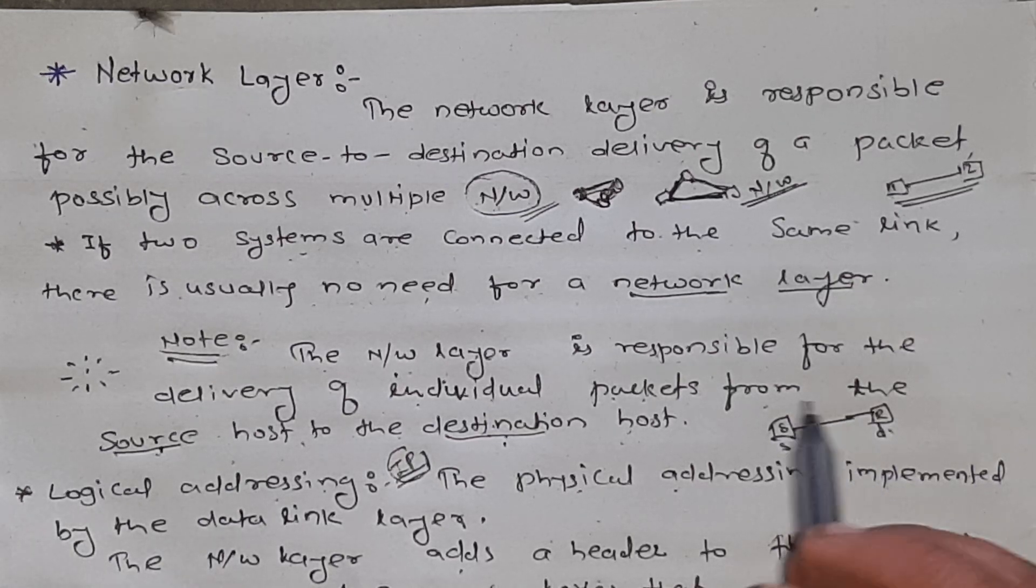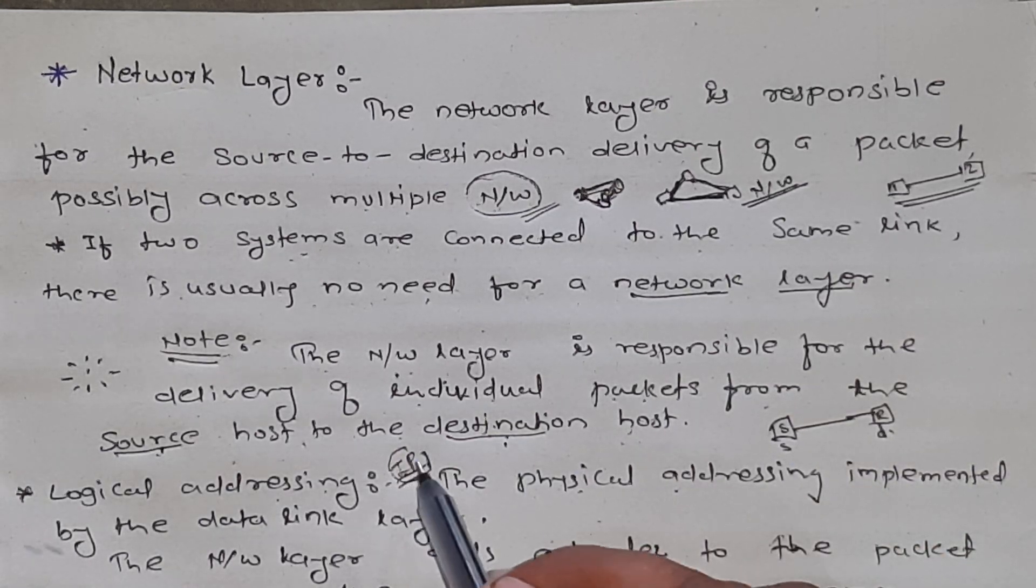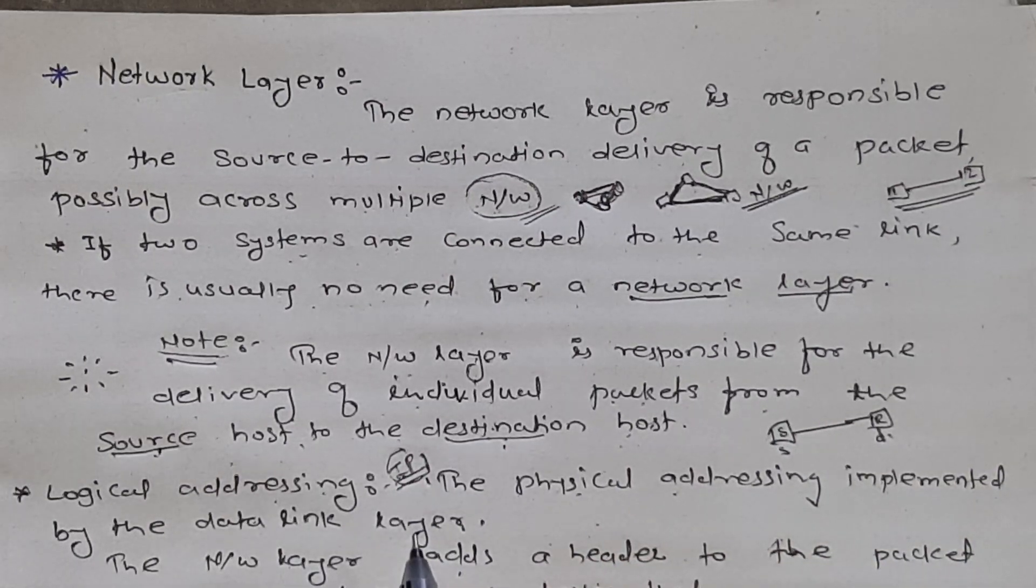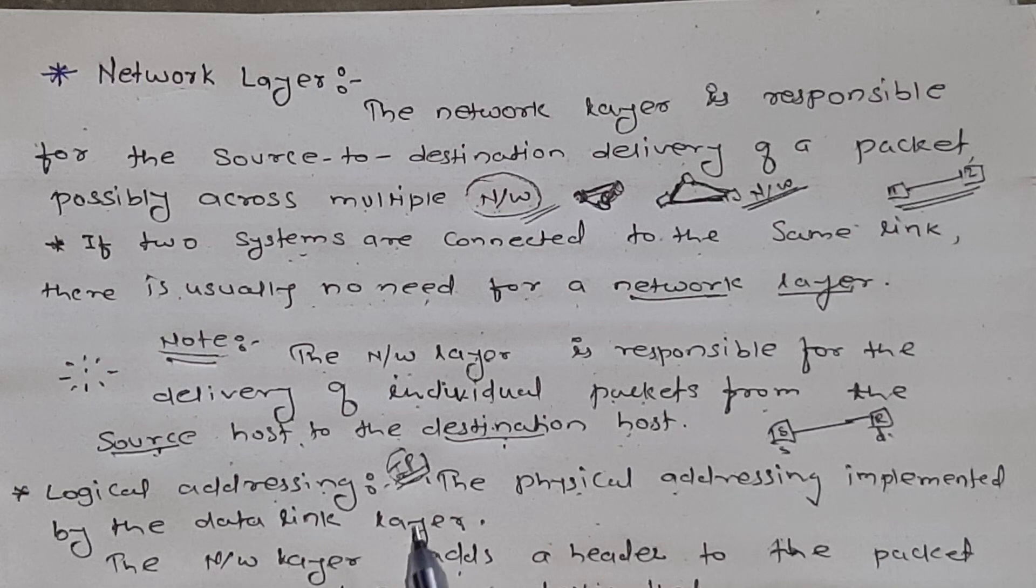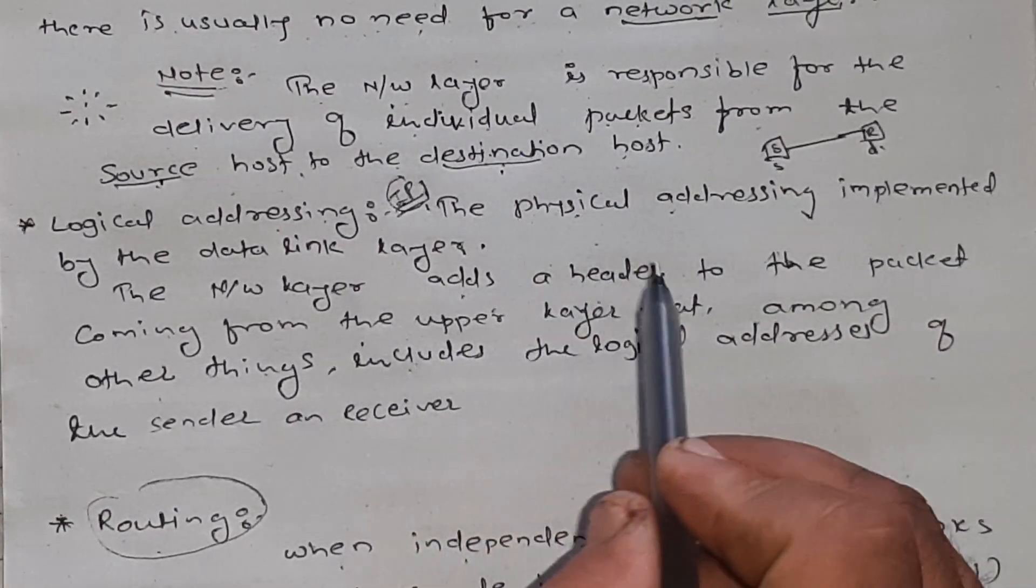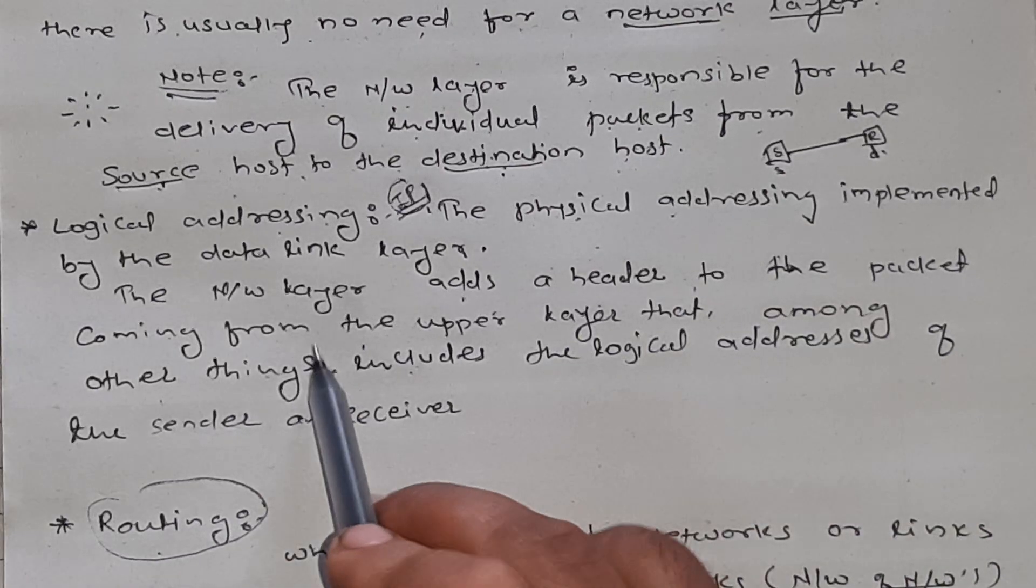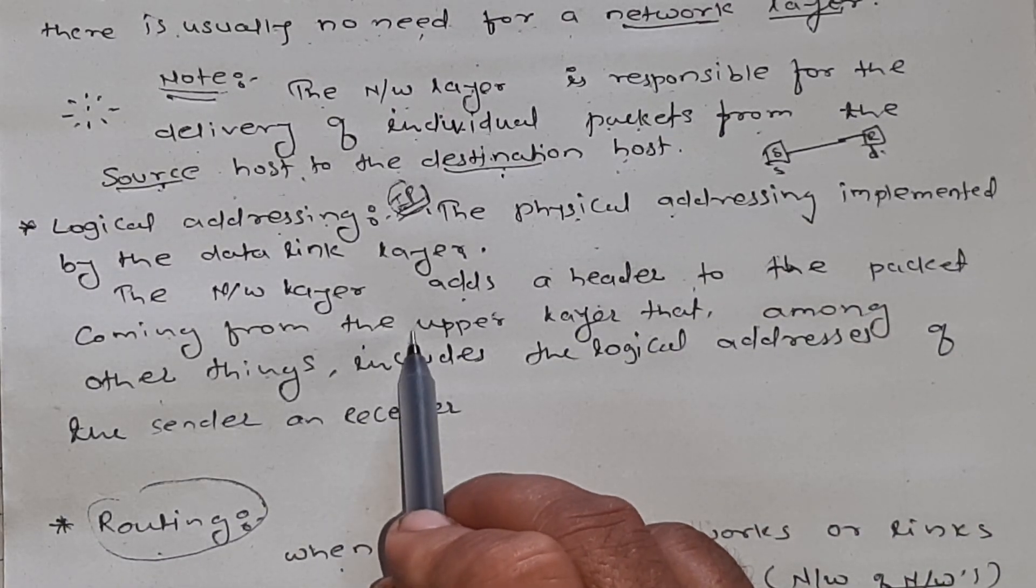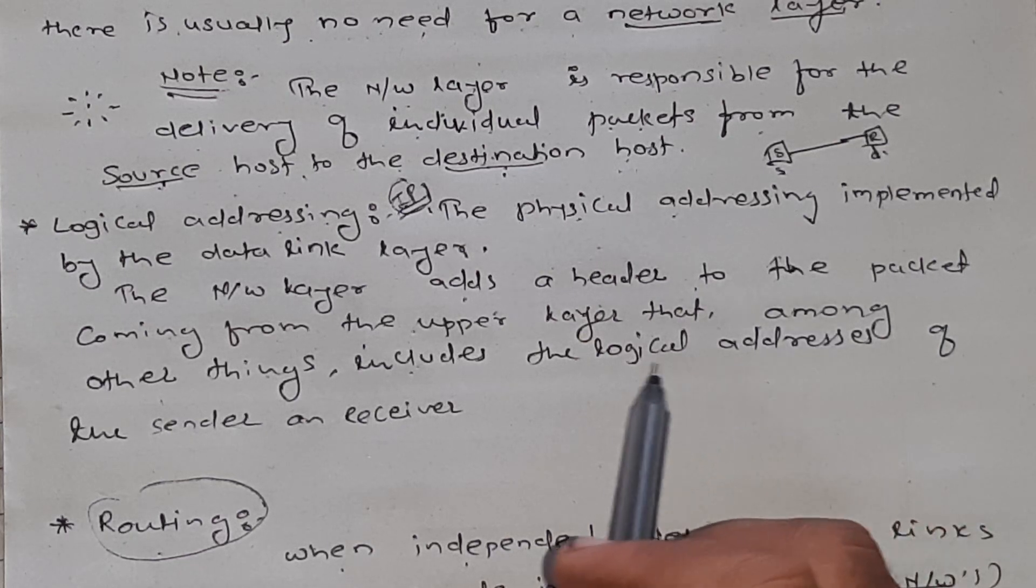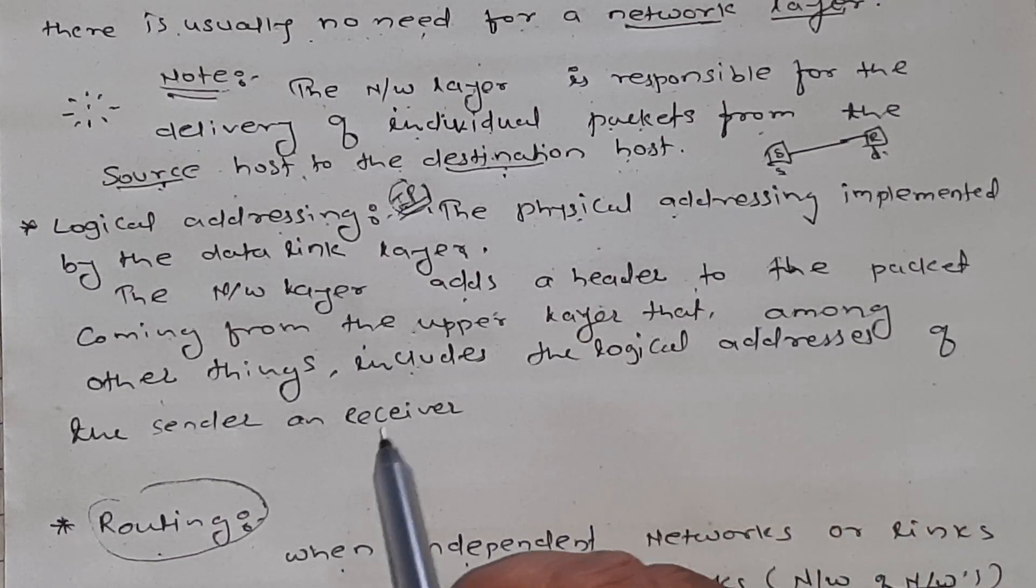Logical addressing is nothing but IP addresses. The physical addressing is implemented by the data link layer. As we know already in our previous lecture, the network layer adds a header to the packet coming from the upper layer that, among other things, includes the logical addresses of the sender or receiver.